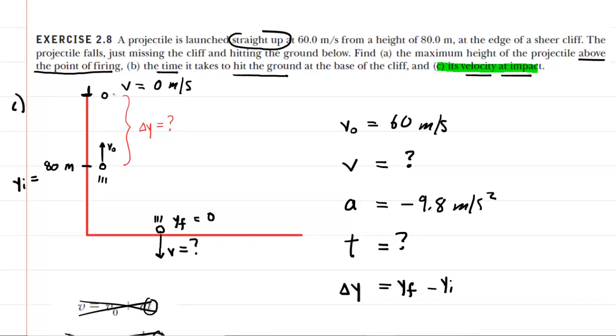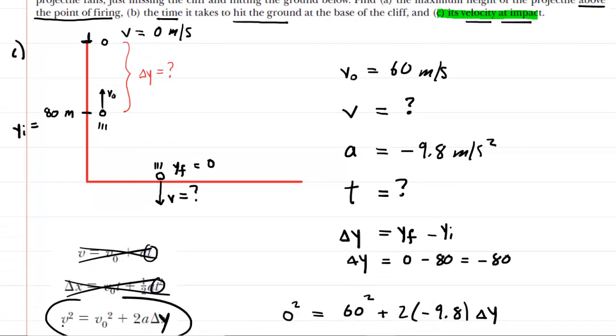So in other words, for the delta y, we're going to have the final y coordinate of 0 minus the initial, which is 80, and that turns out to be negative 80. So that's our delta y is negative 80. Now we're going to turn back to the equations of kinematics, and we're going to try to pick the right one that's going to give us the final velocity.